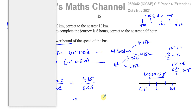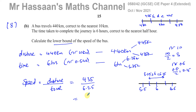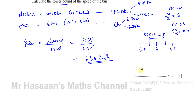So we divide 435 by 6.25, which gives us 69.6 kilometers per hour. That is the answer for the lower bound of the speed: 69.6 km/h.